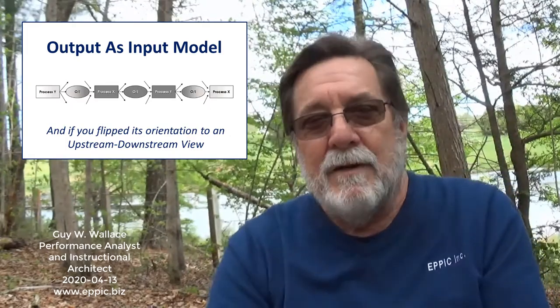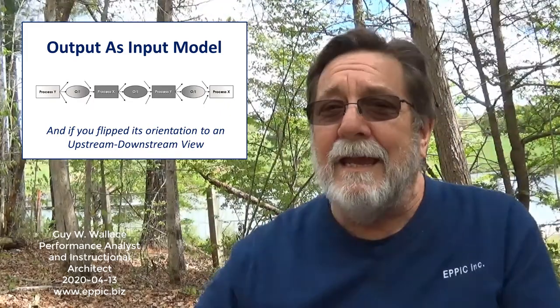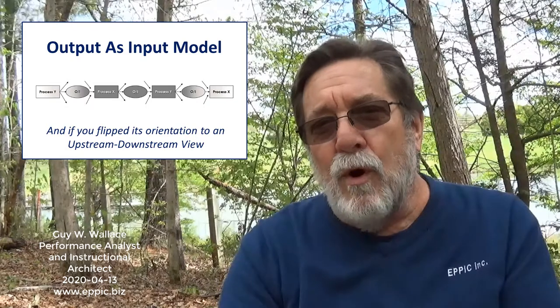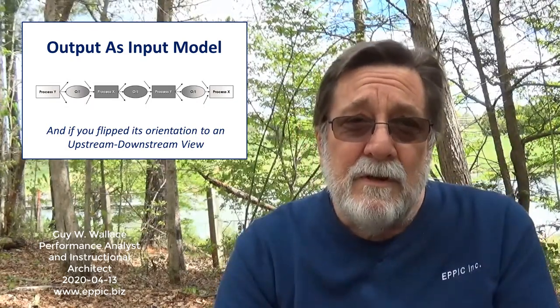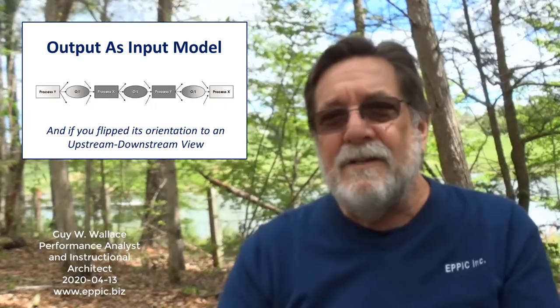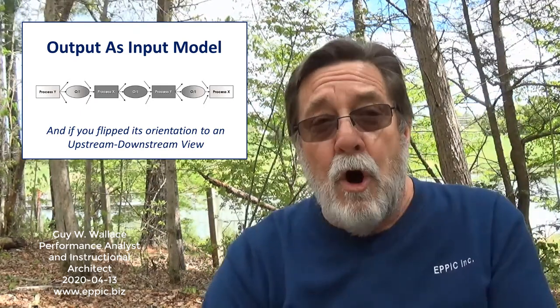I've flipped their model and I'm going to add elements that Gary will talk about in his clip. I have two models here: the inputs-as-outputs model, which I created because people didn't seem to understand that every output of a process becomes an input downstream — whether inside an enterprise, to the customer, or through the supply chain. One needs to understand that the value of an output is determined by downstream users, and one needs what Walter Scott of Motorola called 'line of sight.'